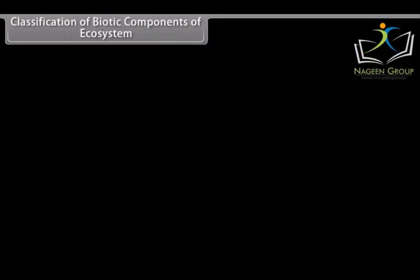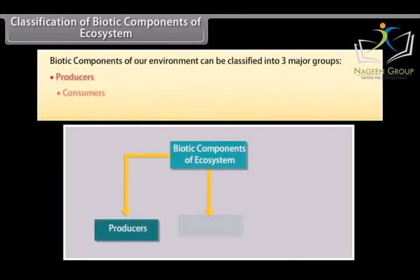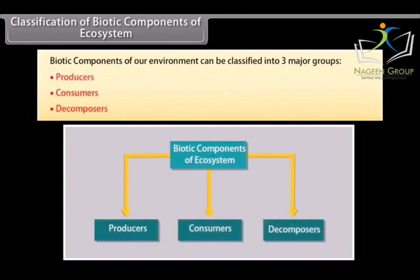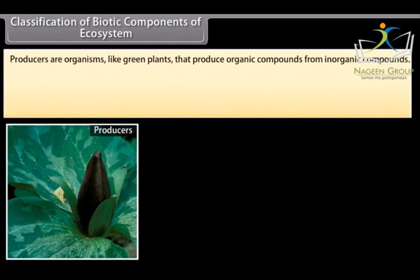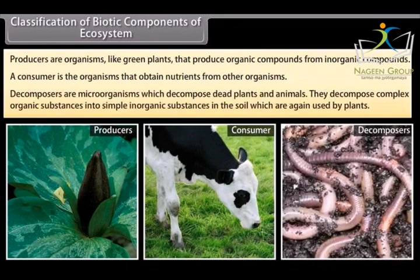Biotic components of our environment can be classified into three major groups: Producers, Consumers, and Decomposers. Producers are organisms like green plants that produce organic compounds from inorganic compounds. A consumer is an organism that obtains nutrients from other organisms. Decomposers are microorganisms which decompose dead plants and animals into simple inorganic substances in the soil, which are again used by plants.